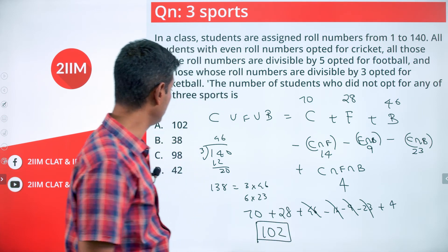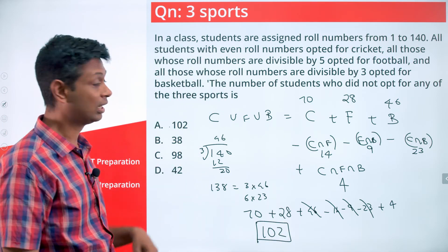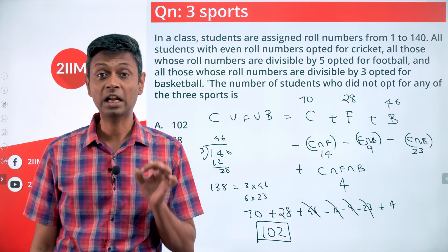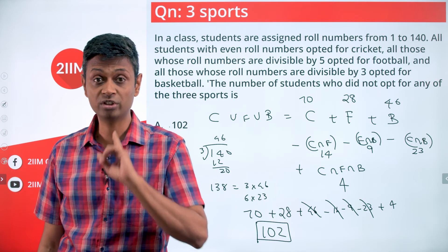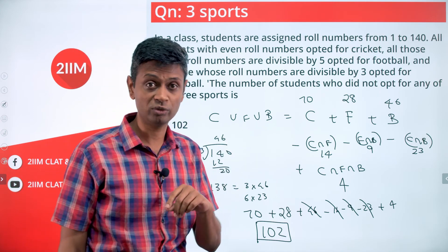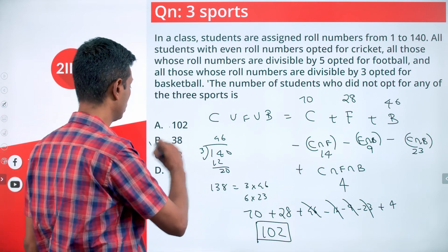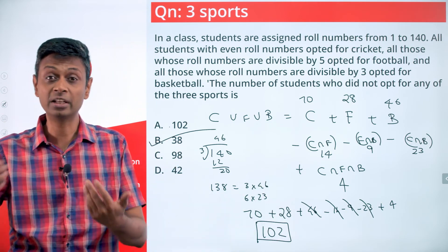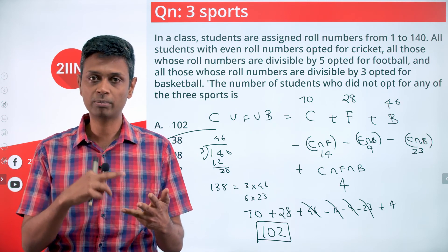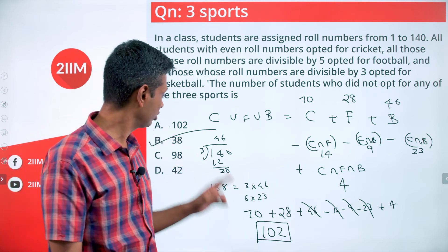Remember, 102 is cricket union football union basketball - 102 people play at least one of these 3 sports. The question asks how many did not opt for any of these. Out of 140 students, we subtract 102, leaving 38 remaining. The answer is 38.